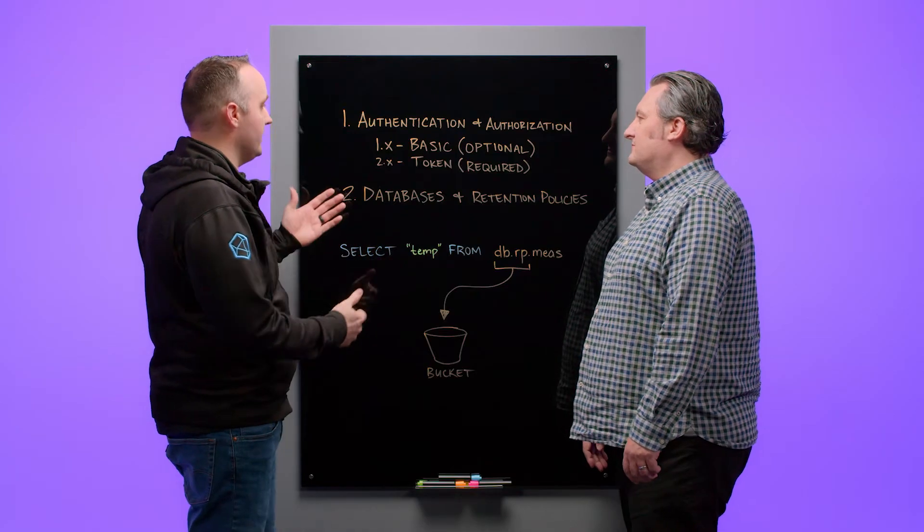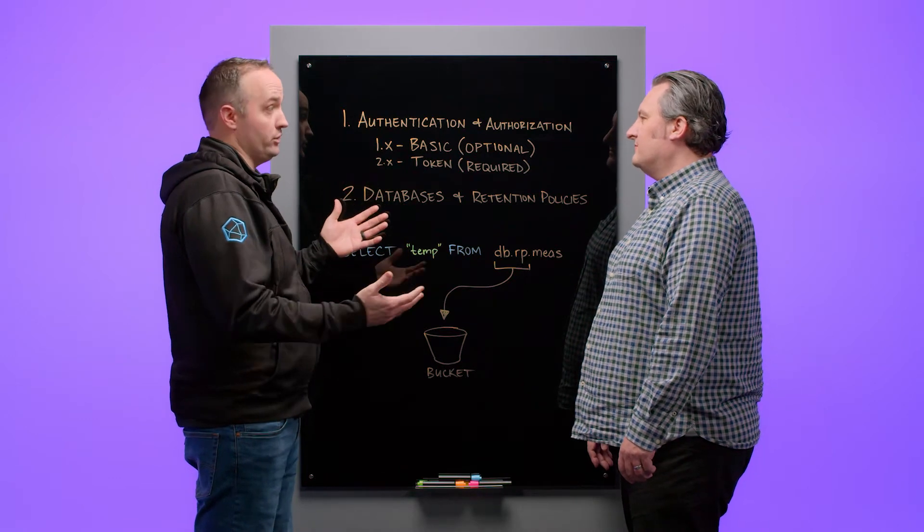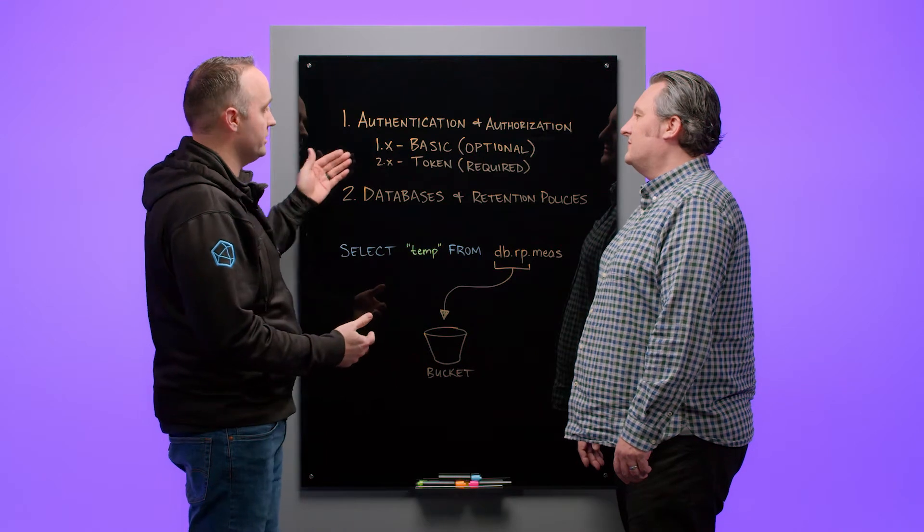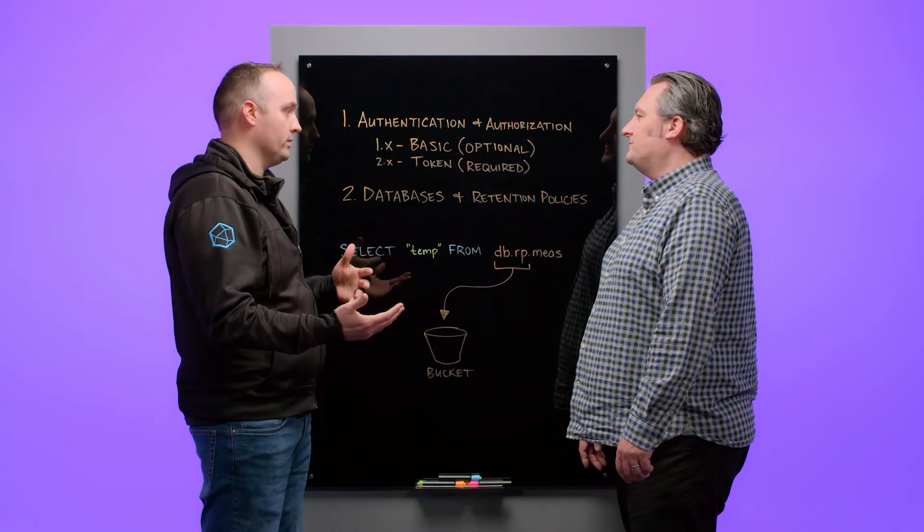The first one is authentication and authorization. With 1.x, this was optional. You didn't have to secure your 1.x instance, but if you did, it was done using basic authentication. So you would use a username and a password to authenticate against a 1.x instance.